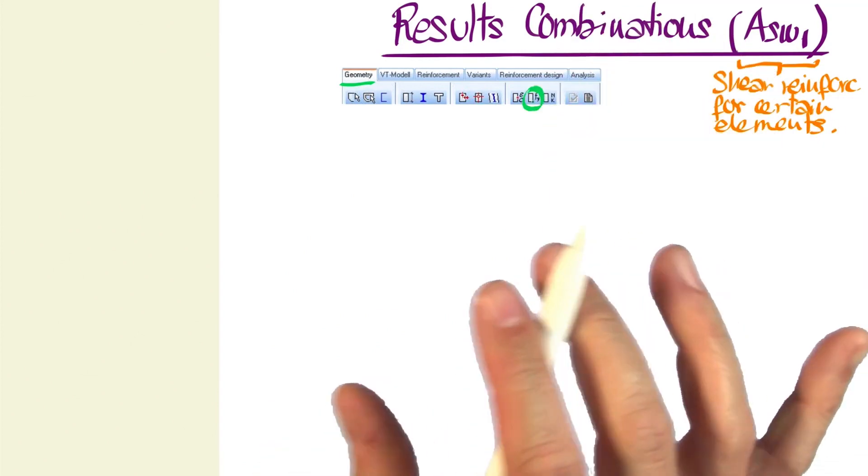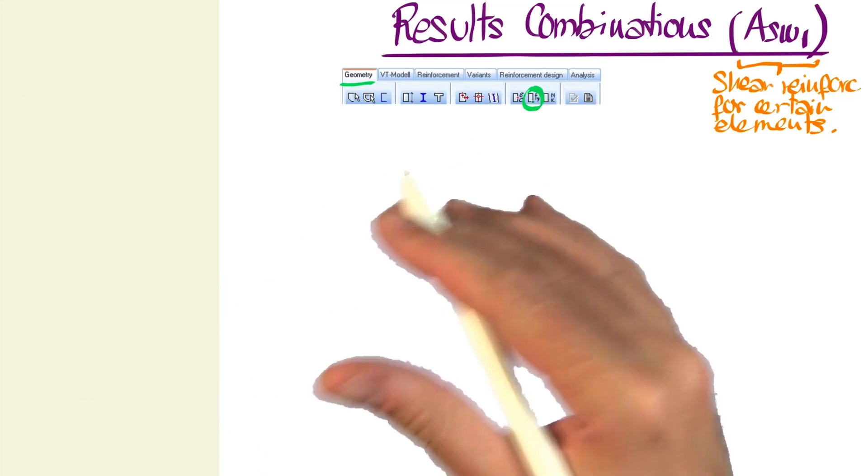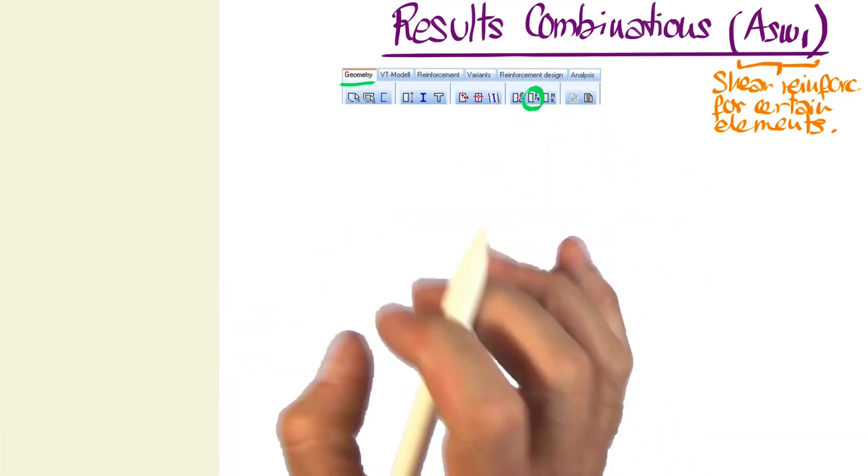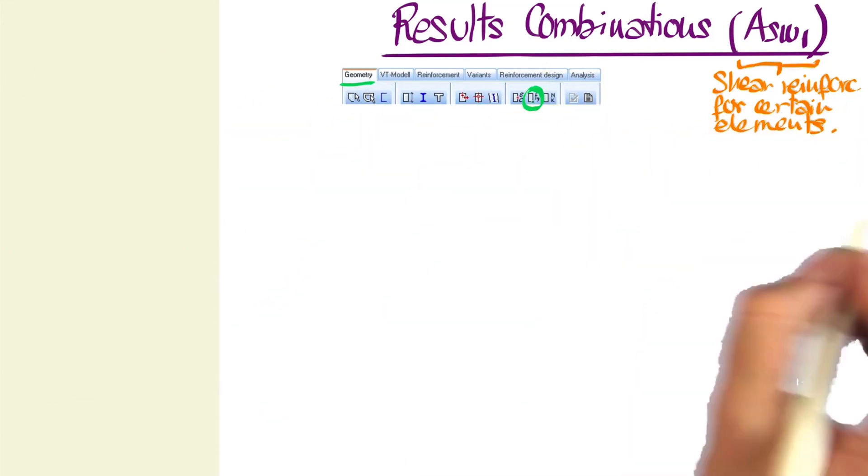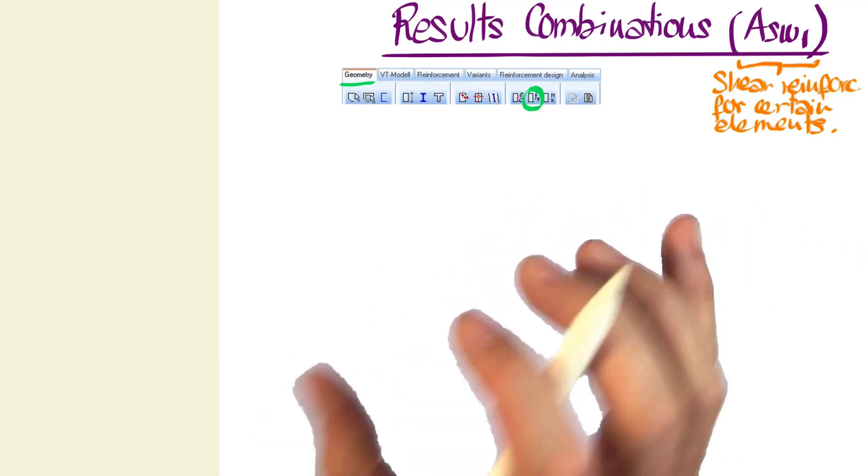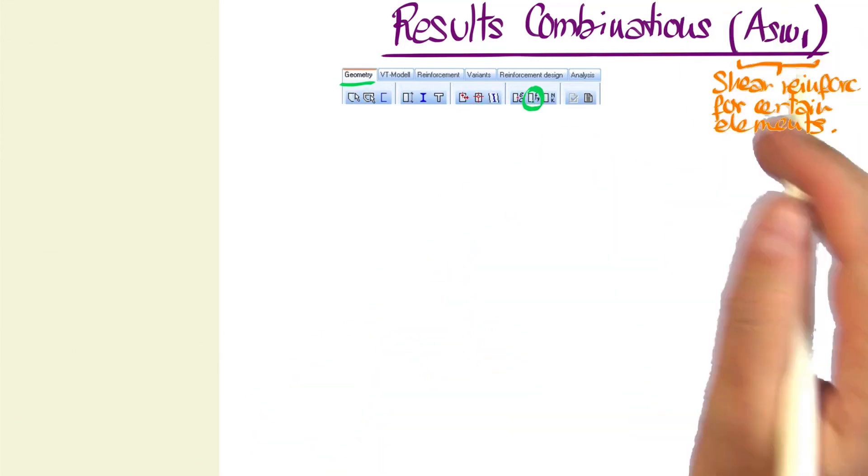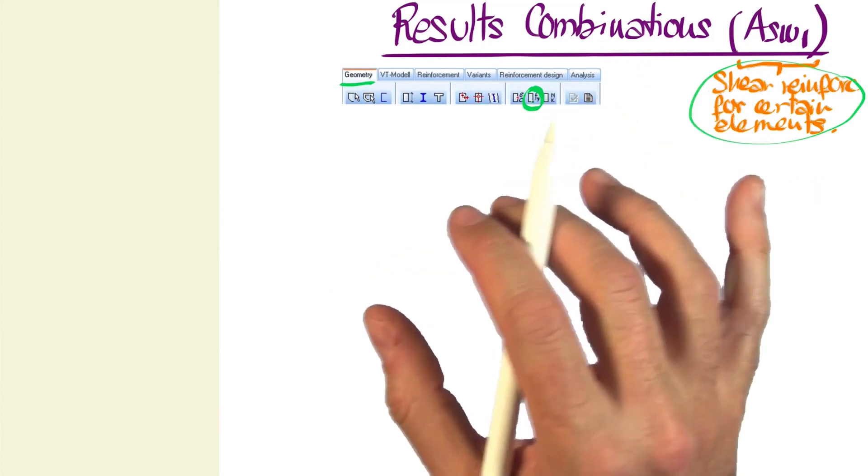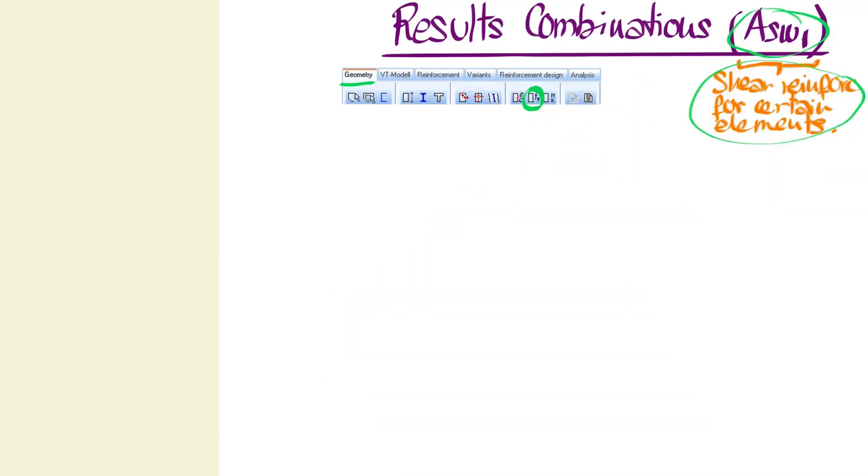We mentioned that this would be explained in detail once we'd taken a look at shear, torsion, and longitudinal reinforcements. So let's now take a closer look at this function. For certain parameterized cross-sections, we'll observe the identification ASW1, always next to the cross-section.